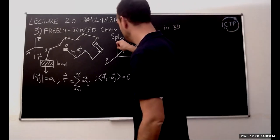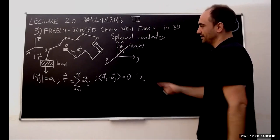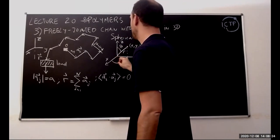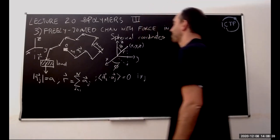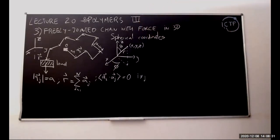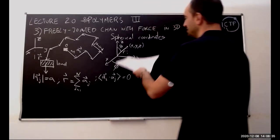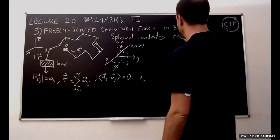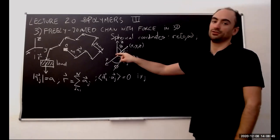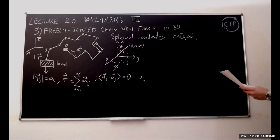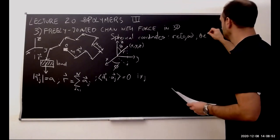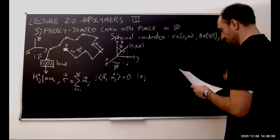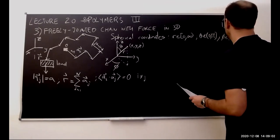In spherical coordinates, we characterize a point by three degrees of freedom: the radius r — distance from the origin — and two angles. Theta is the angle with the vertical axis, and phi is the angle with the x-axis — the projection onto the xy-plane. The ranges are: r from zero to infinity, theta from zero to pi, and phi from zero to pi.